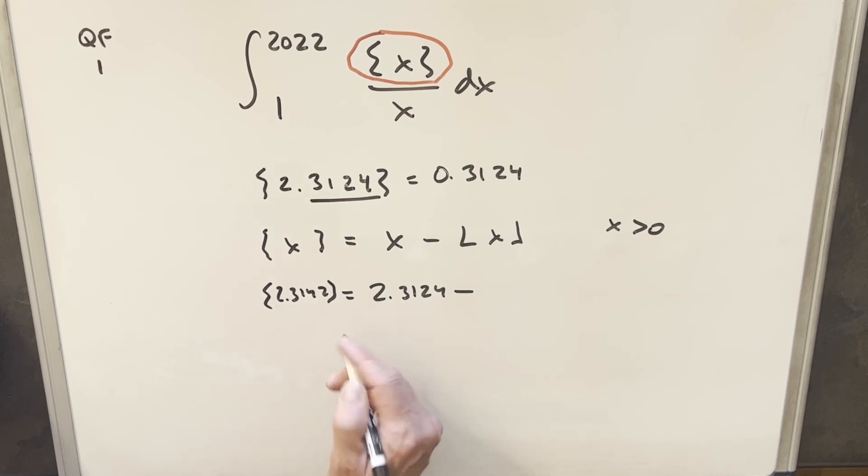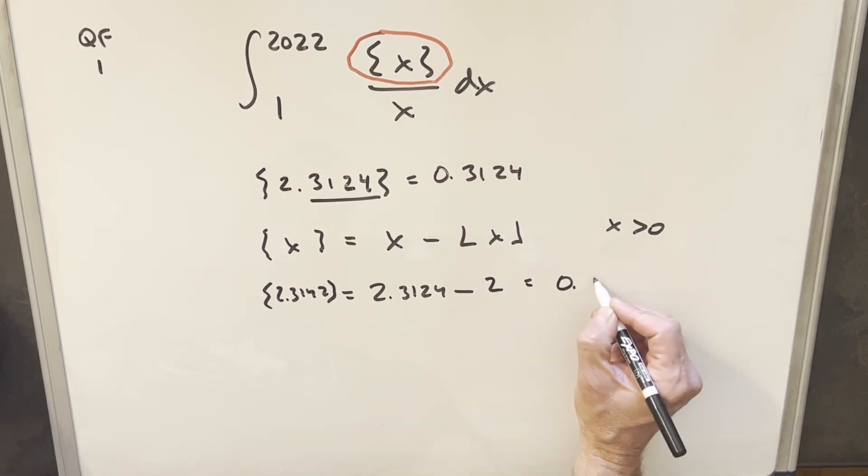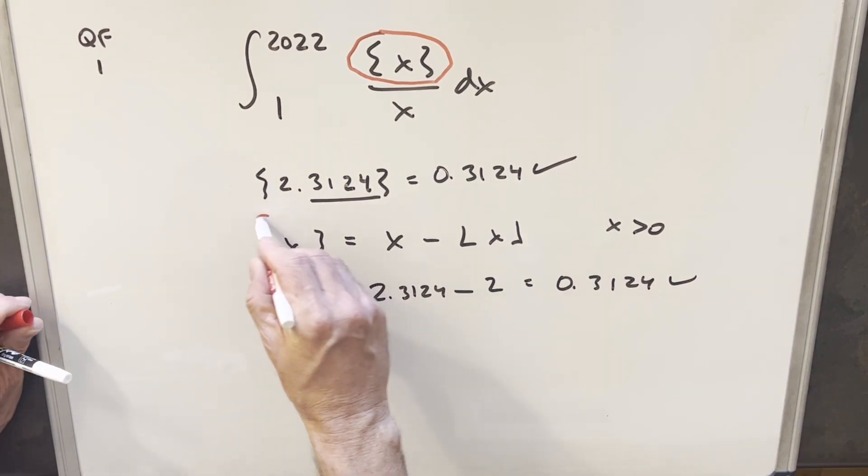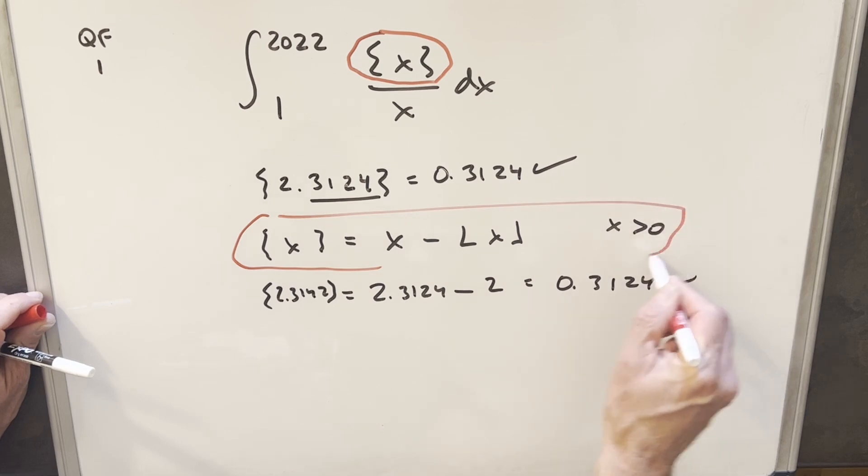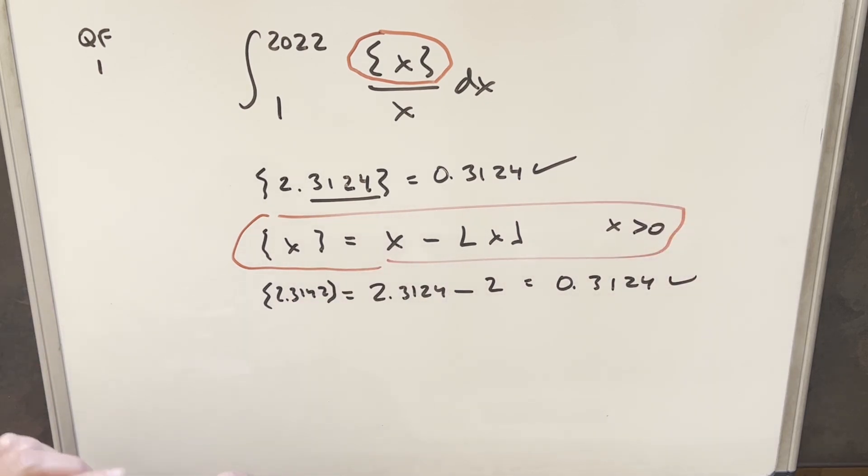So for 2.314, whatever this thing is, it's going to round us down to 2. And so if we subtract this off, we get 0.3124. But what that's going to allow us to do is take this value and we'll use that and we'll plug that back into our integral and move on from there.